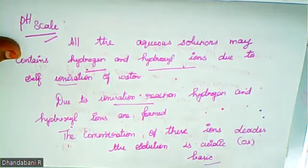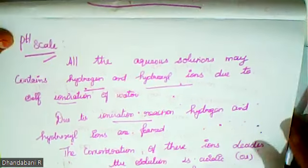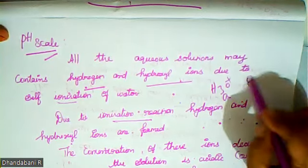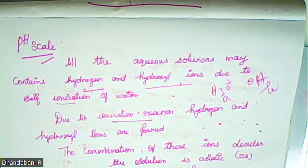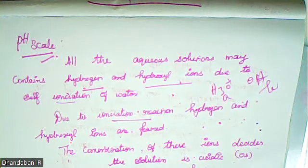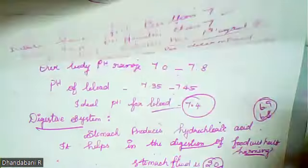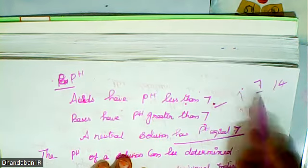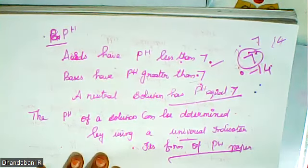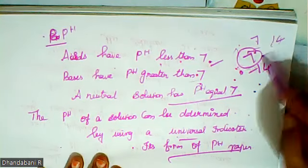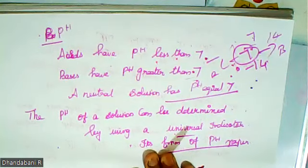The concentration of these ions determines whether the solution is acidic or basic. H3O+ is the acid and OH− is the base. On the pH scale, acid nature is less than 7, 7 is the neutral point, below 7 is acidic nature, and above 7 is basic nature. This is the pH scale of color indicators.